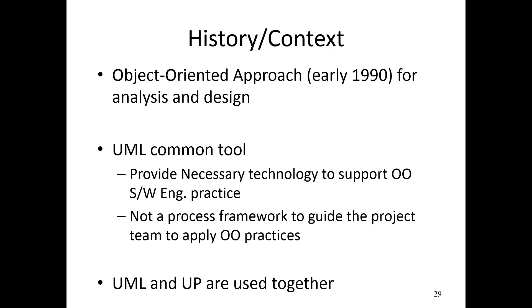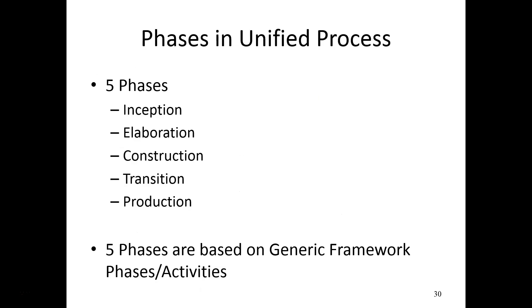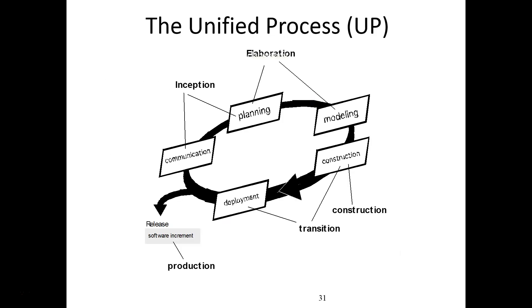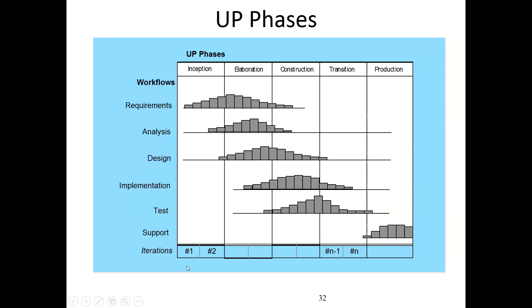The history: in the early 1990s the object-oriented approach came for analysis and design. UML became the common tool for object-oriented analysis and design, and UML and the Unified Process are used together. There are five phases in the Unified Process: inception, elaboration, construction, transition, and production. The workflows map to these phases: requirements span inception and elaboration; analysis spans elaboration; design spans elaboration and construction; implementation spans construction; testing spans construction and transition; and support is the production phase.